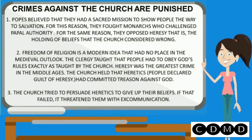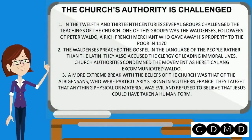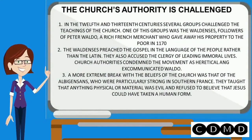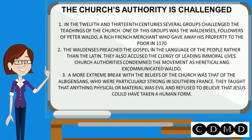The church's authority is challenged. In the 12th and 13th centuries, several groups challenged the teachings of the church. One of these groups was the Waldenses, followers of Peter Waldo, a rich French merchant who gave away his property to the poor in 1170. The Waldenses preached the gospel in the language of the people rather than in Latin, and accused the clergy of leading immoral lives. Church authorities condemned the movement as heretical and excommunicated Waldo.